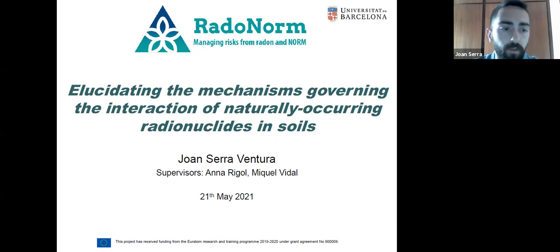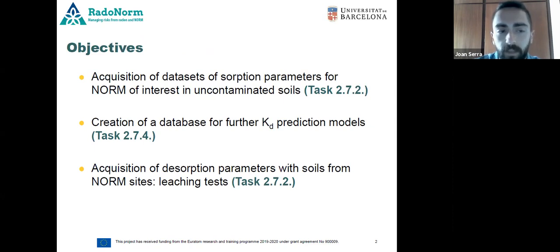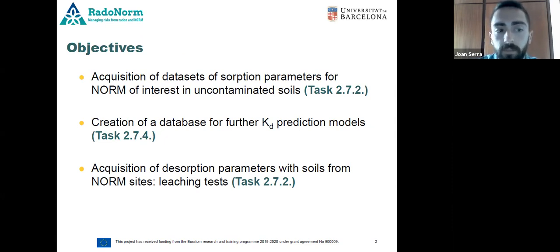The objectives of this work are: firstly, to obtain a set of soil parameters for NORMs of interest in soils that are not contaminated. With this data, and also data collected from the literature, we will create a Kd database to further predict Kd values. Finally, soils from NORM sites will be used in leaching tests to assess NORM behavior in these scenarios.